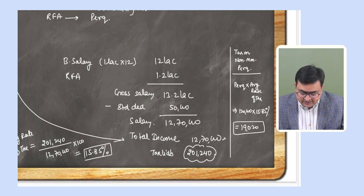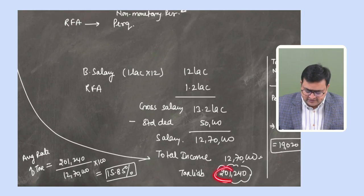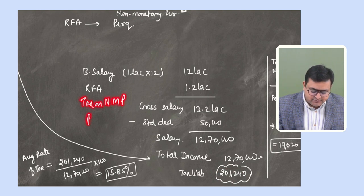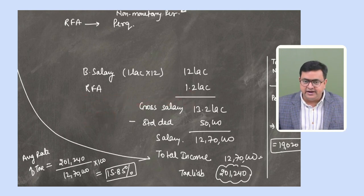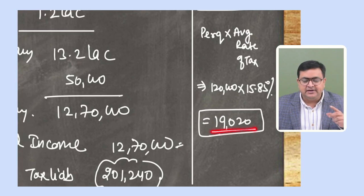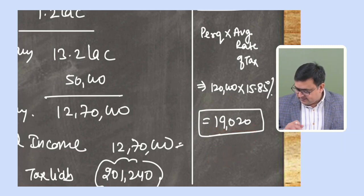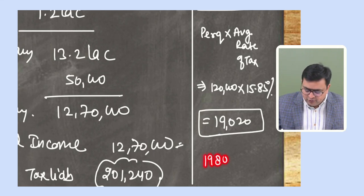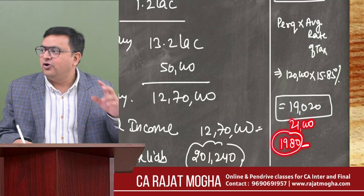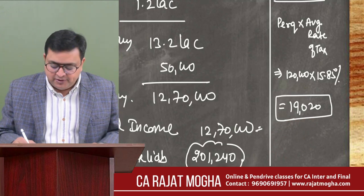If HUL pays this Rs. 19,020, it is an exempt perquisite under Section 10. This is called tax on non-monetary perquisite paid by the employer — the employee gets this benefit tax-free. However, if the employer pays any amount in excess of Rs. 19,020 — say Rs. 21,000 — then the excess Rs. 1,980 would be taxable. Only tax on non-monetary perquisite is exempt; any excess amount is taxable.